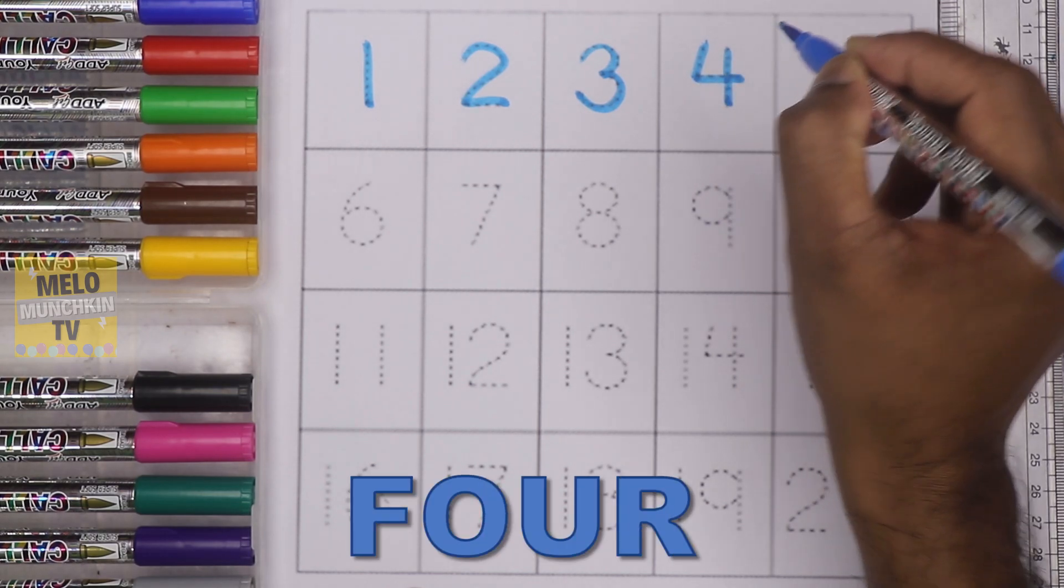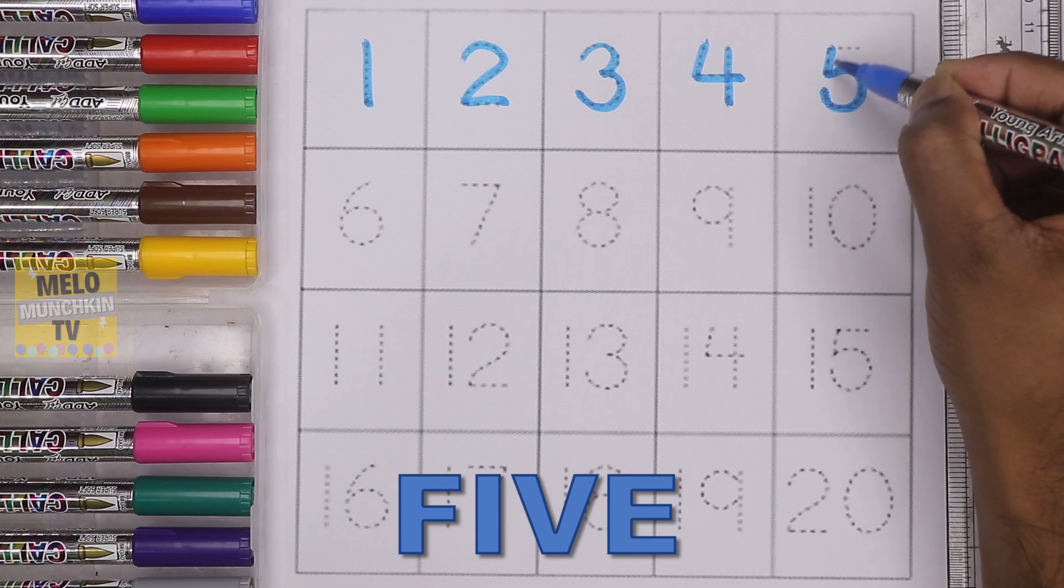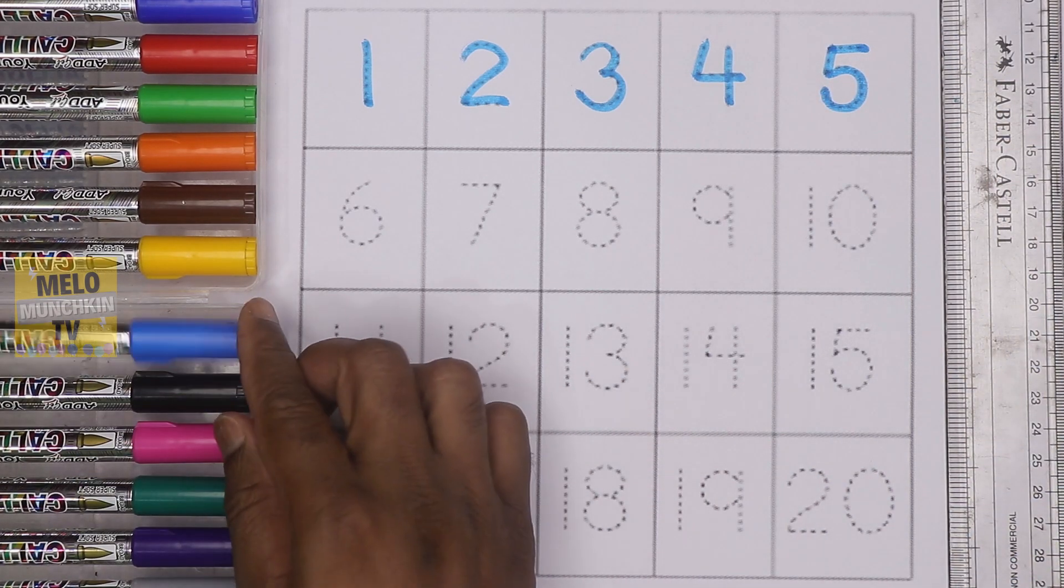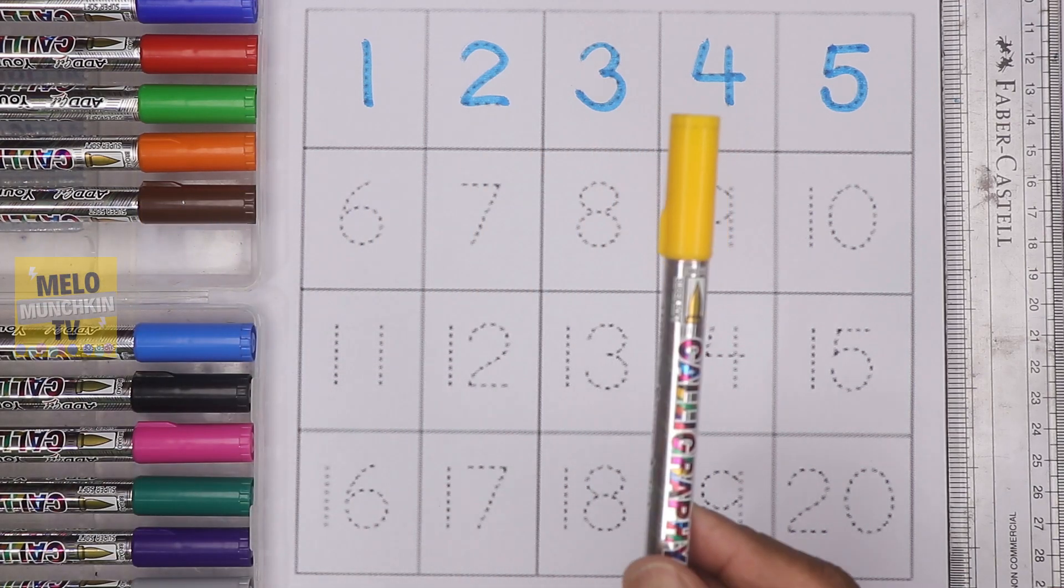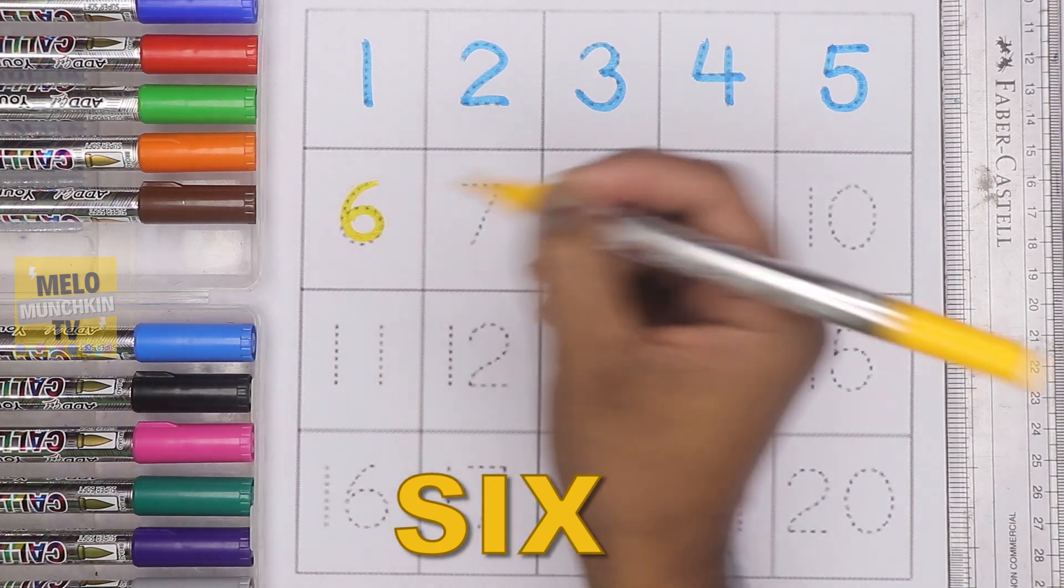This is number five, F-I-V-E, five. Now I'll change the color from blue to yellow. This is yellow. After five it is six, S-I-X, six.